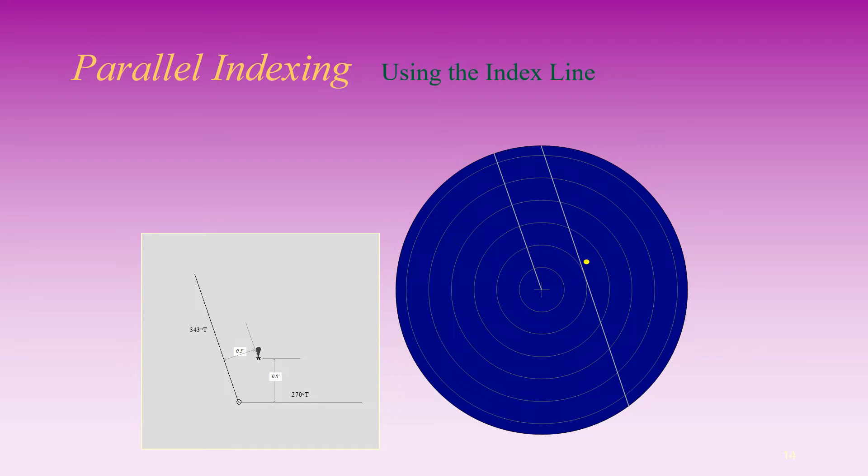Vessel is slightly port of track, that is further away from the beacon than intended, so you need to correct it by turning the vessel slightly to starboard.